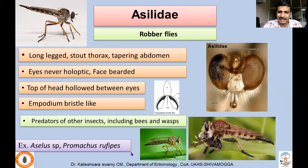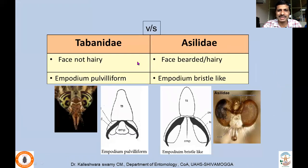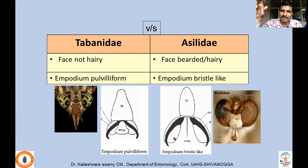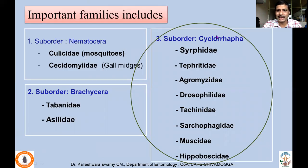To distinguish Tabanidae and Asilidae: Tabanidae has a face that is not hairy, empodium is pulvilliform (lobe-like); Asilidae has a hairy, bearded face and empodium that is bristle-like. The empodium is located on the pre-tarsal segment, between two pulvilli, and helps in gripping the substrate when alighting or sitting. With that, we move to the next suborder, Cyclorrhapha.